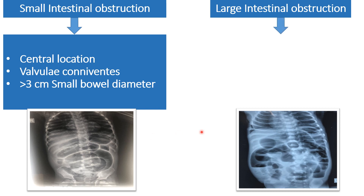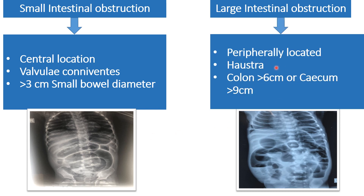In large intestine obstruction, the dilated bowel loops will be present in the periphery of the abdomen as well. As in this X-ray, you can see in the periphery there are dilated bowel loops with air-fluid levels, and haustra will be visible throughout the colon. Whenever the diameter is more than 6 cm for the colon, it is pathological. For the cecal part, more than 9 cm is considered pathological.